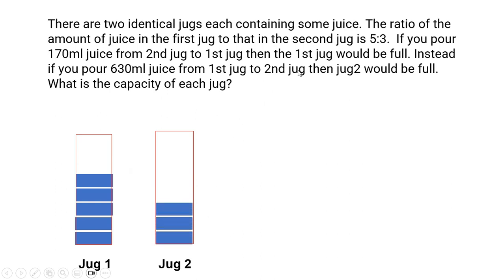Now we go to the first condition here. If you pour 170 ml juice from the second jug to the first jug, meaning from here if you take and pour 170 ml then the first jug would be full. So when you do that, the amount that is required to make it full is 170 ml.